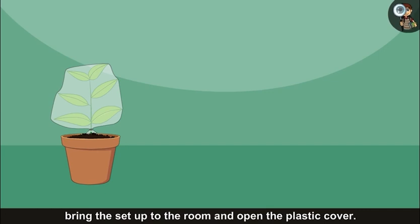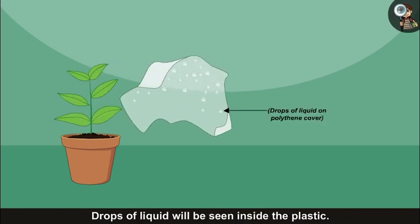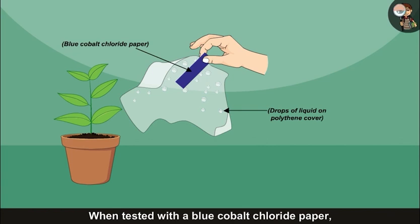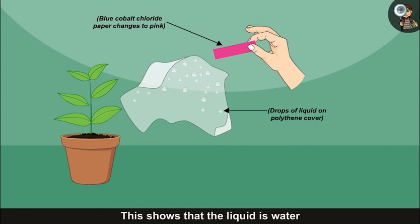After the specified time is over, bring the setup to the room and open the plastic cover. Drops of liquid will be seen inside the plastic. When tested with a blue cobalt chloride paper, it will change to pink. This shows that the liquid is water which came from the plant by transpiration.